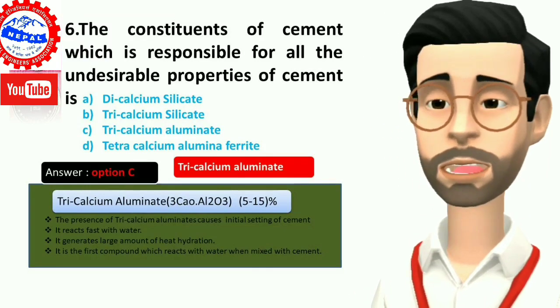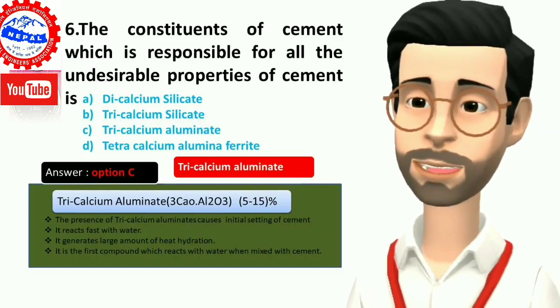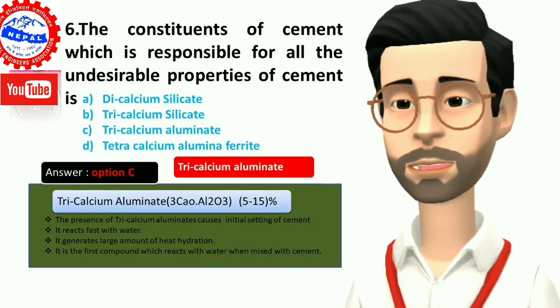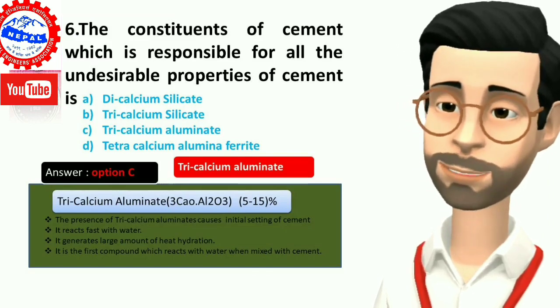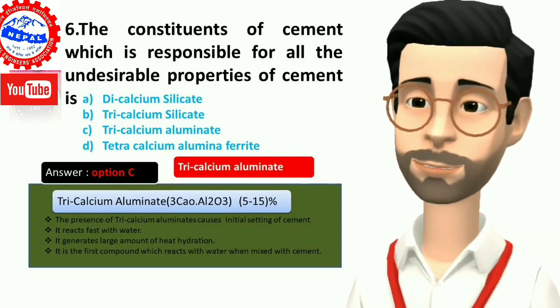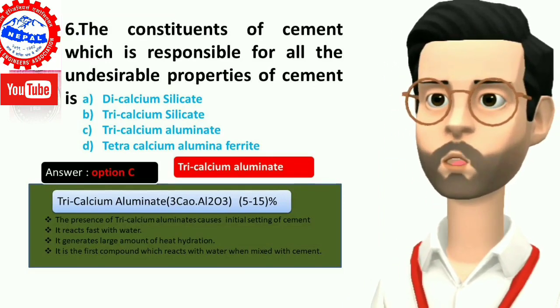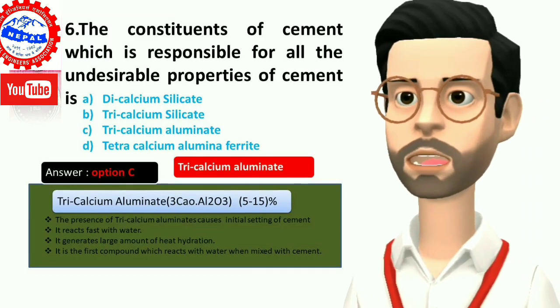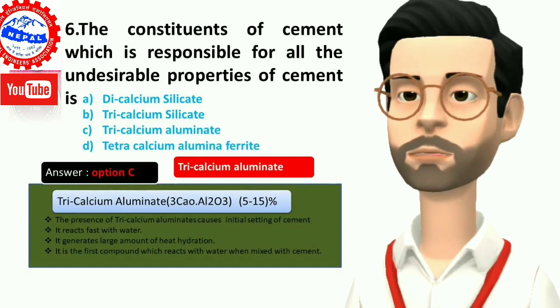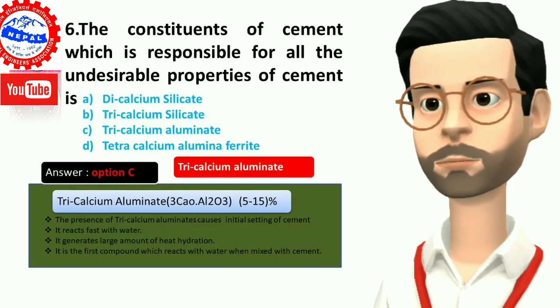Six, the constituents of cement which is responsible for all the undesirable properties of cement is: A) dicalcium silicate, B) tricalcium silicate, C) tricalcium aluminate, D) tetracalcium aluminoferrite. Answer is option C, tricalcium aluminate. The presence of tricalcium aluminate causes initial setting of cement. It reacts fast with water, generates large amount of heat of hydration. It is the first compound which reacts with water when mixed with cement.